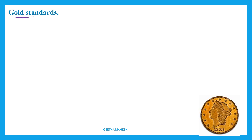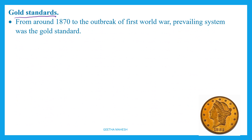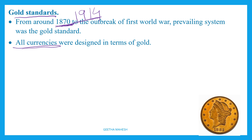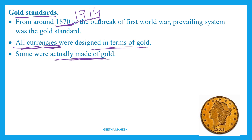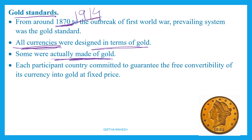Gold standard — earlier, gold coins and currency notes were made of gold. They are using gold as a medium of exchange to buy goods and services. This is the gold standard. A few countries used gold as their currency, including for foreign trade.